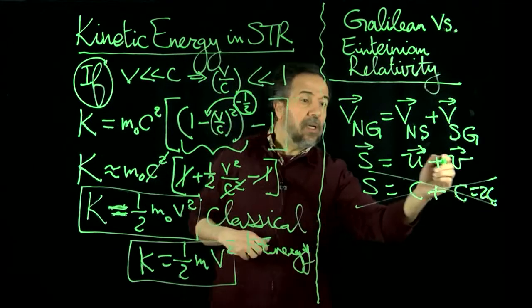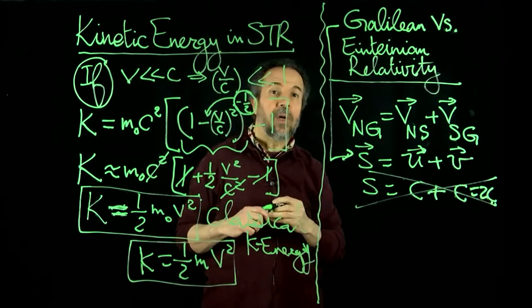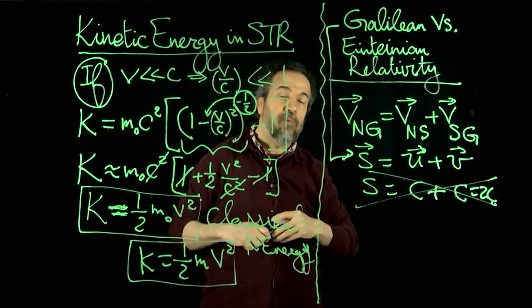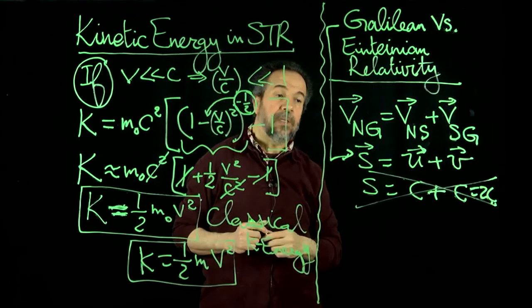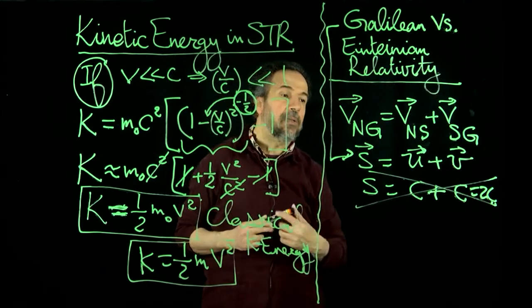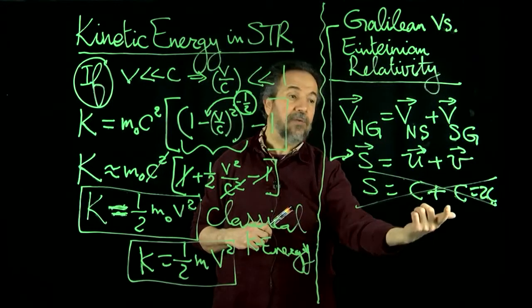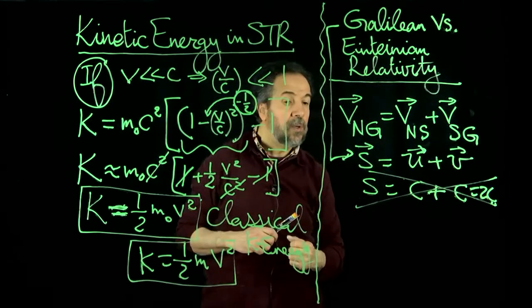So, this, which is the Galilean relativity, is good as long as I am dealing with objects that are not moving with relativistic speeds. The minute you start having objects moving with relativistic speeds, this formula does not cut it anymore. As you can see, it gives us something that doesn't make sense.